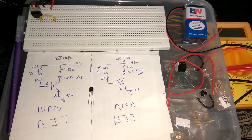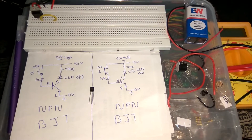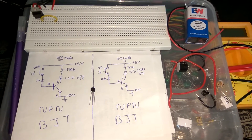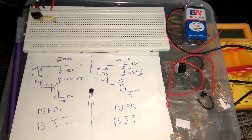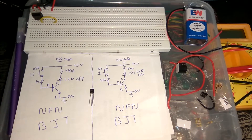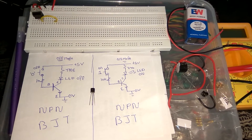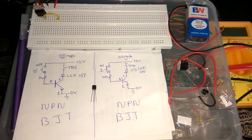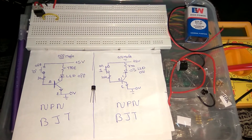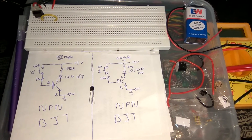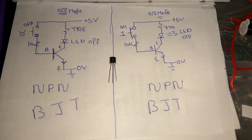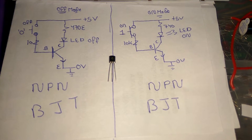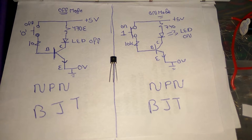Transistor is that component which is used in almost all electronics appliances such as your desktop, your laptop, even your mobile phone. You know the processor of your mobile phone is made up of billions of transistors. That's why I call the transistor the heart of electronics.